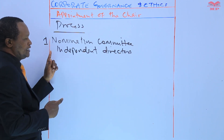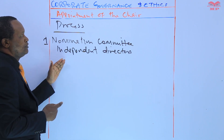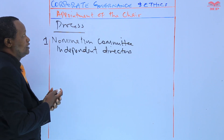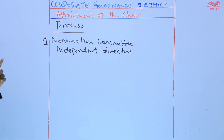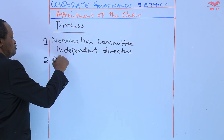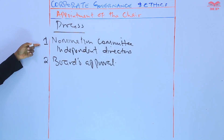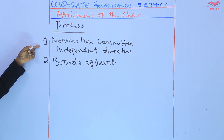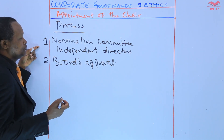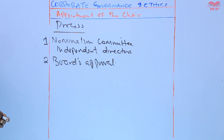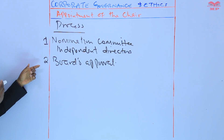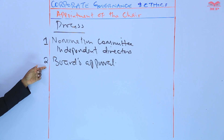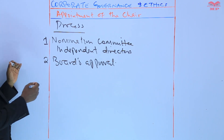After identifying potential candidates and coming up with a name of one who can occupy the position of the chair, that potential candidate needs the board's approval. The nomination committee, which is a committee of the board, has to present the name to the full board for approval. The nomination committee presents its recommendation to the full board, and the final decision is made through a vote.